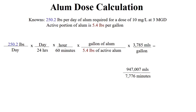We multiply 0.49 times 11 to determine that there are 5.4 pounds of aluminum sulfate in a gallon of alum. For any chemical, once we know the pounds per day we need to feed and the pounds per gallon of the active ingredient in our chemical, we can determine the accurate feed rate. We know we want to feed 250 pounds per day, and alum has 5.4 pounds per gallon.